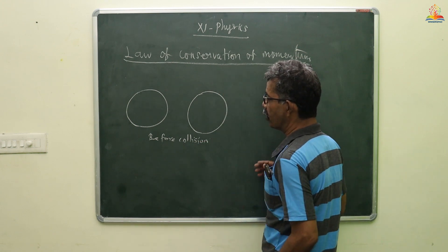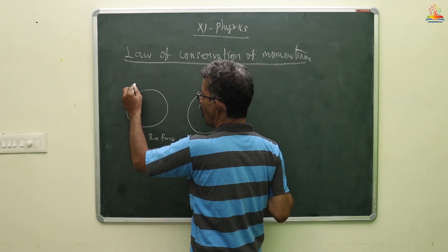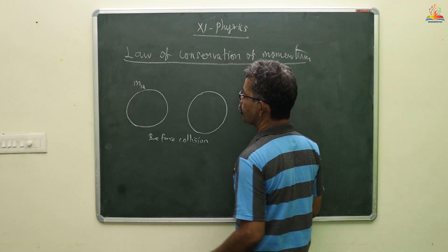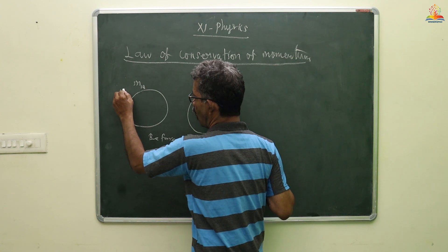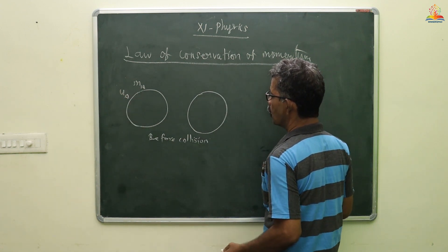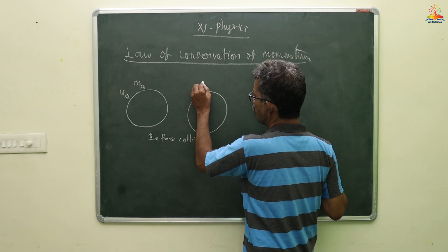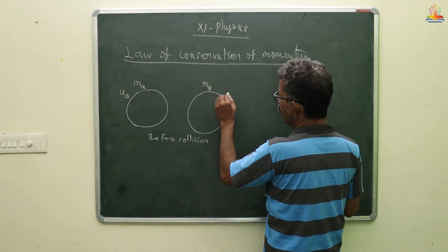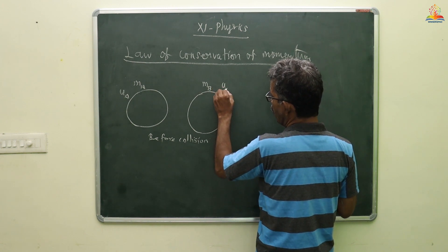Before collision: object A has mass M_A and initial velocity U_A. Object B has mass M_B and initial velocity U_B.